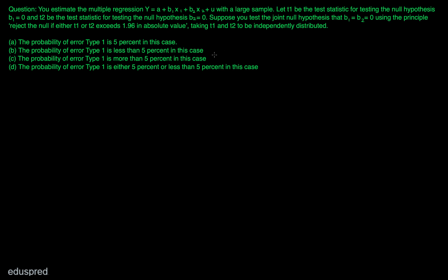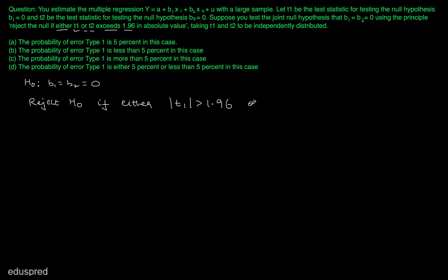Now let's take a look at the information given to us. We are testing the joint null hypothesis that b1 equal to b2 equal to 0, and we are also given the rejection rule for this null hypothesis. The rejection rule is that we reject this null hypothesis if either t1 or t2 exceeds 1.96 in absolute value. That means we reject if either |t1| > 1.96 or |t2| > 1.96, where t1 corresponds to the null hypothesis b1 equal to 0 and t2 corresponds to the null hypothesis b2 equal to 0.